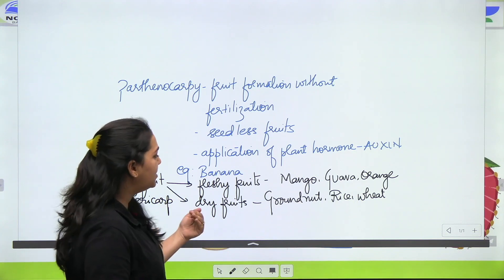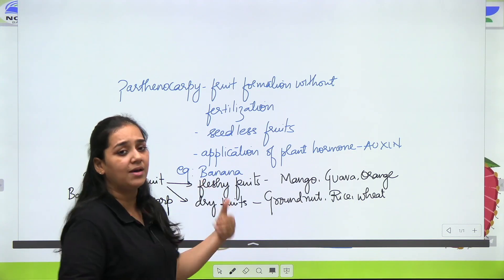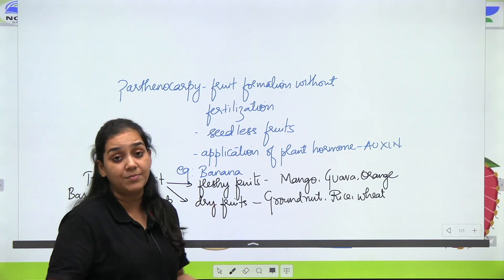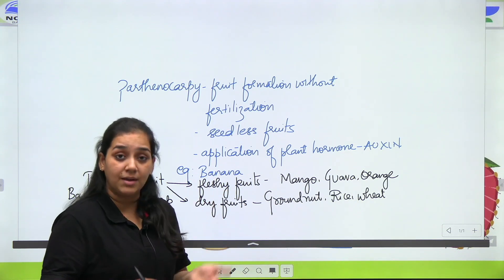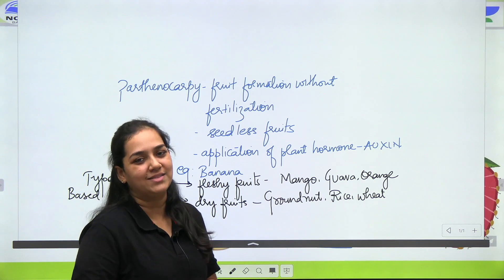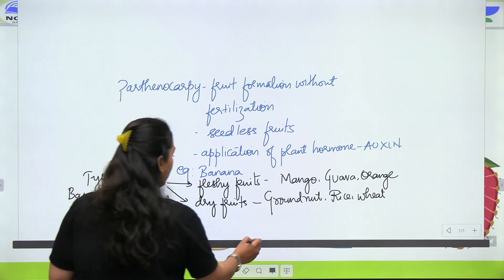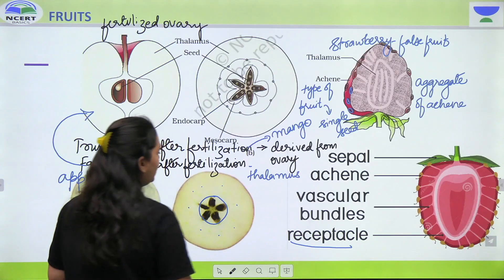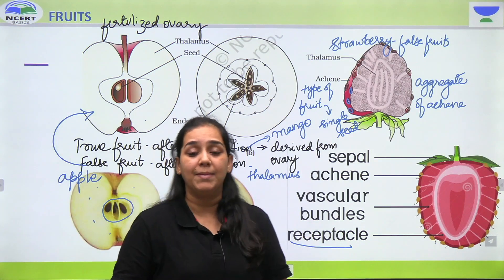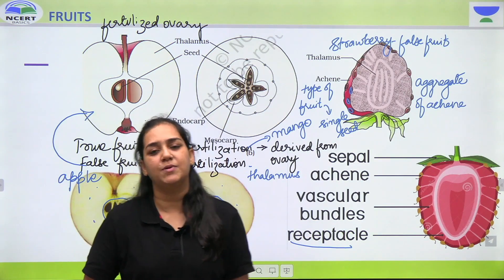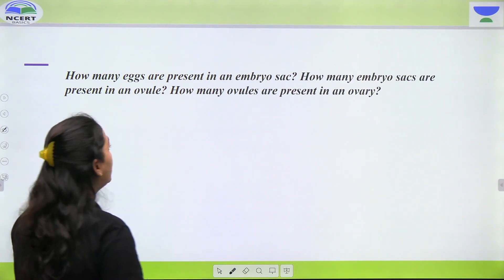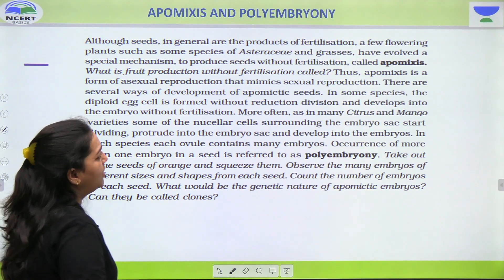If you see further, actually fleshy fruits ke bhi alag-alag types hai, dry fruits ke bhi alag-alag types hai, but you do not have to study that for your NEET syllabus. I hope this is clear. So this was about fruits. Ab hum baat karte hai the last part of this particular chapter, and that is apomixis and polyembryony.